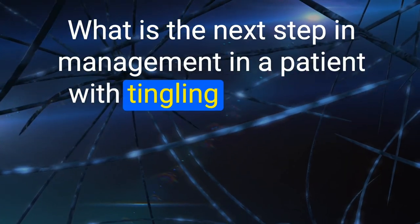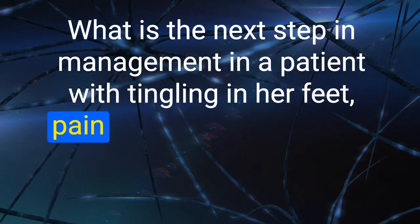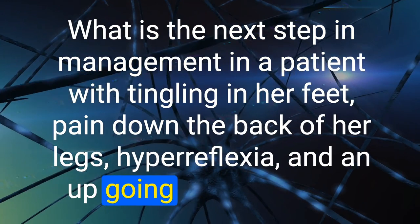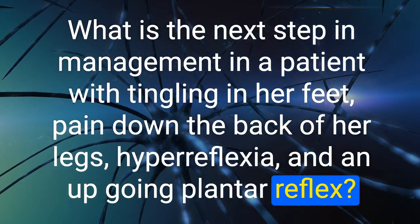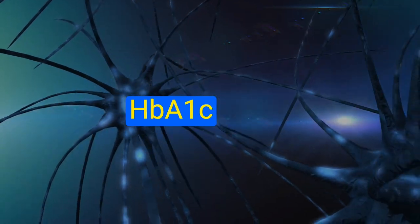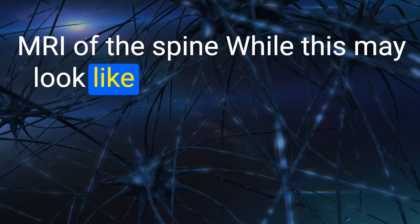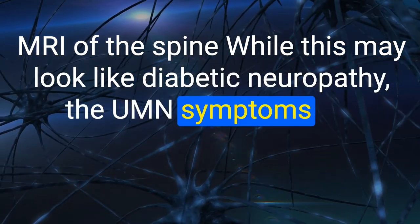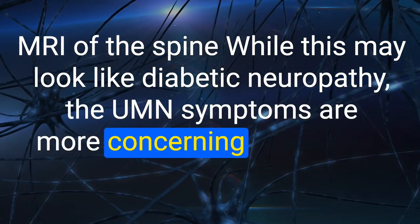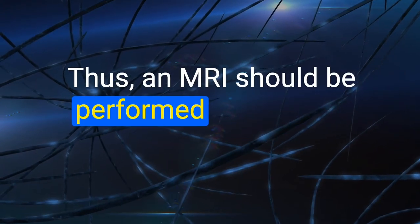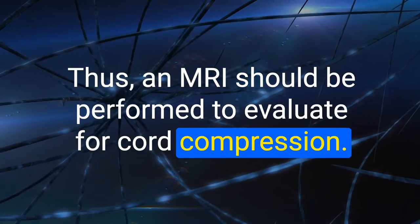143. What is the next step in a patient with tingling in her feet, pain down the back of her legs, hyperreflexia, and a positive plantar reflex, with HbA1c of 7.6%? MRI of the spine. While this may look like diabetic neuropathy, the UMN symptoms are more concerning, as diabetic neuropathy is strictly LMN. MRI should be performed to evaluate for cord compression.